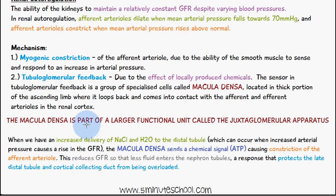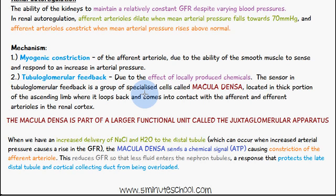The mechanisms of renal autoregulation include, firstly, myogenic constriction of the afferent arteriole. The smooth muscle present in the arterioles has the ability to detect and respond to an increase in arterial pressure. The second mechanism is tubuloglomerular feedback, which is due to the effect of locally produced chemicals. The sensor in tubuloglomerular feedback is a group of specialized cells called the macula densa, located in the thick portion of the ascending limb where it loops back and comes into contact with the afferent and efferent arterioles in the renal cortex.